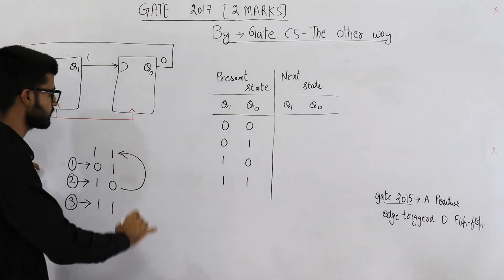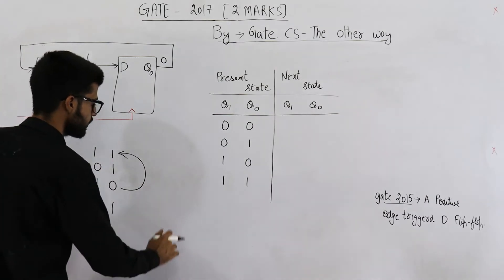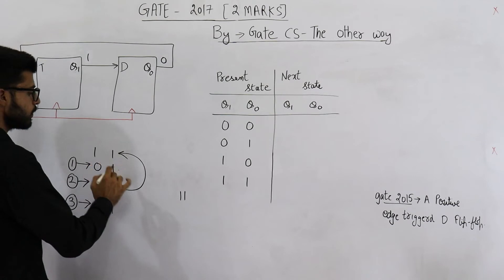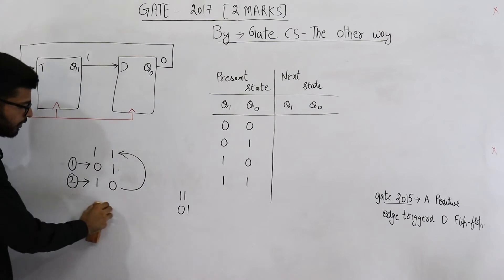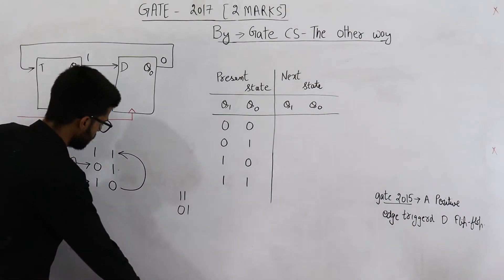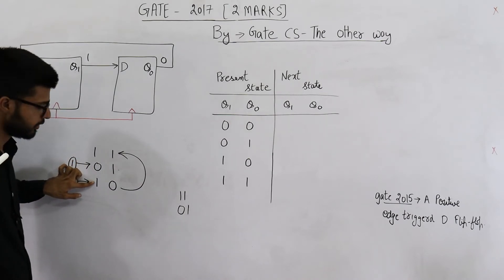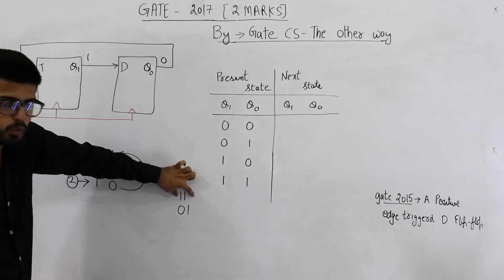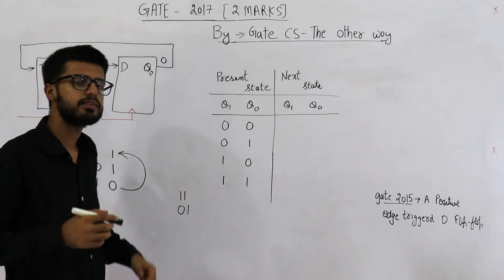So after this next state is this one. So your answer is, after giving third clock cycle, the state is 11, and after giving fourth clock cycle, the state will be 01. See, once you reach here, it will start from 11 again. So if you begin from this state, after giving first clock, you reach here, after giving second clock, you reach here, and after giving third clock, you will reach here. So this is what happens after third clock, and this is what happens after fourth clock. So 11 and 01 are your answers.